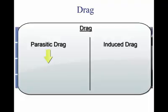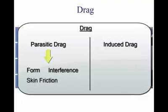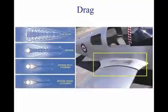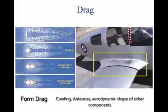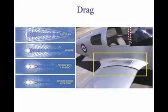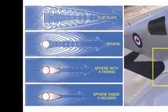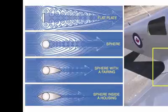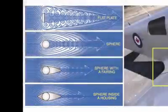Parasite drag is any drag that is not caused directly from the aircraft producing lift. It is broken down into three categories: form drag, interference drag, and skin friction. Form drag is caused by things like the cowling, antennas, and the aerodynamic shape of other components. How quickly airflow rejoins itself is determined by the shape of the object it's flowing around. As the picture on the left shows, the best way to reduce form drag is to streamline as many of the aircraft components as possible.